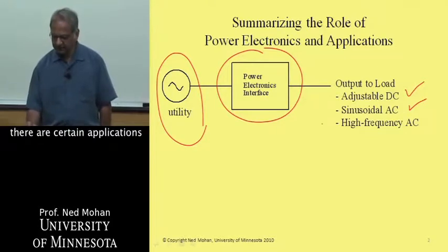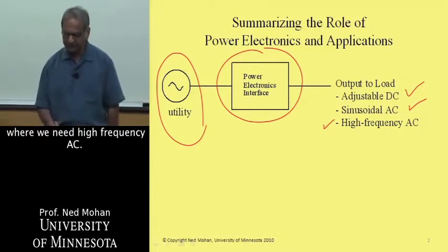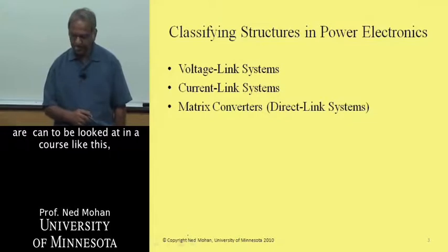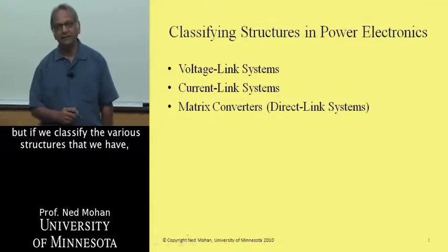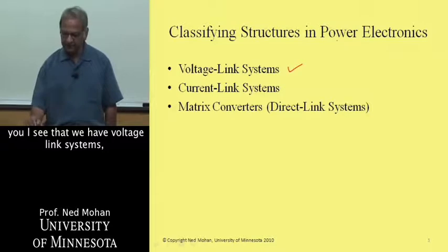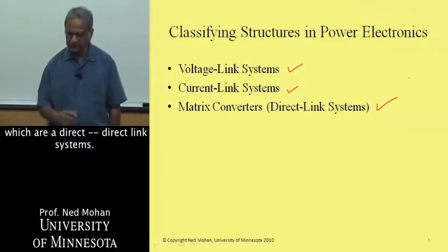in wind electric applications. And then there are certain applications like high-frequency lighting, compact fluorescent lamps, where we need high-frequency AC. So all of these things are to be looked at in a course like this. But if we classify the various structures that we have, we'll see that we have voltage link systems, current link systems, and so-called matrix converters, which are direct link systems.